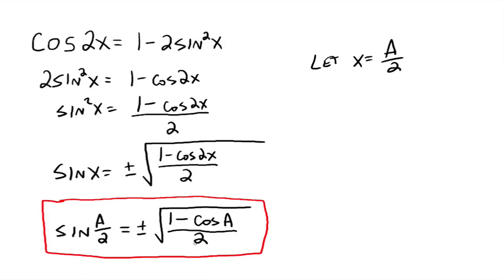This is how we can evaluate it. Notice the plus or minus — that's chosen depending on what quadrant a over 2 is in. If your angle a over 2 is in quadrant 3, then this value on the right is going to be negative because sine of an angle in quadrant 3 is negative. We'll see an example here in just a few minutes.